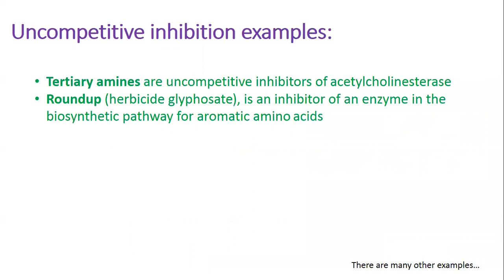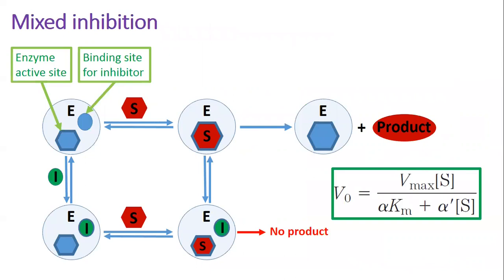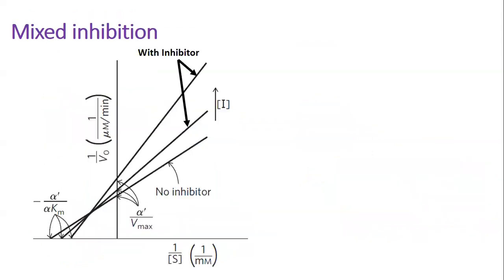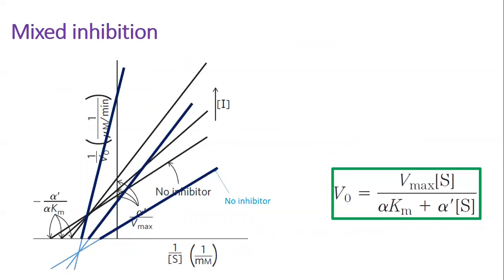The third type of inhibition is mixed. A mixed inhibitor also binds at a site distant from the substrate active site, but it binds to either the free enzyme or the enzyme-substrate complex. The equation describing mixed inhibition is shown on the slide, and this is how it looks on the Lineweaver-Burk plot. V-maximal is affected because the inhibitor renders some fraction of the available enzyme molecules inactive, lowering the effective enzyme concentration on which V-maximal depends. The Michaelis constant may increase or decrease depending on whether the inhibitor binds more strongly to the free enzyme or to the enzyme-substrate complex. Correspondingly, the intersection of the lines can be above or below the x-axis. The binding is reflected in the alpha and alpha-prime factors.